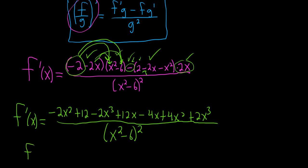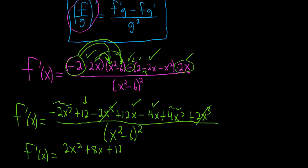Now let's combine like terms. The negative 2x cubed and positive 2x cubed cancel. We have negative 2x squared plus 4x squared, giving 2x squared. Then 12x minus 4x gives 8x, and we're left with the constant 12. So f prime of x equals 2x squared plus 8x plus 12, all over x squared minus 6, quantity squared. That's the final answer. This is a classic quotient rule problem because there's really no other clean way to do it.